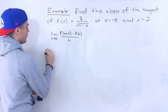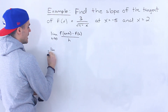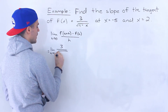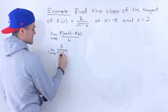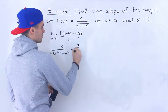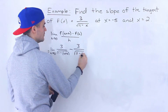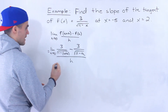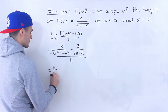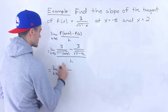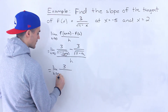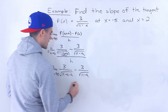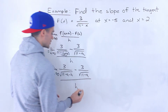Applying this to our specific function, we get the limit as h approaches 0 of 3 over the square root of (11 minus (a+h)), minus f(a) which is 3 over the square root of (11 minus a), all over h. From here, I'll rewrite this by distributing the negative inside the bracket, giving us the square root of (11 minus a minus h) in the first term.